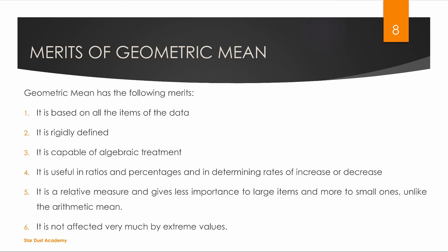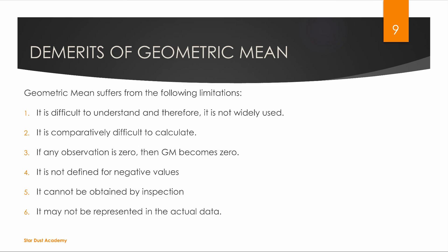Extreme values — if there are higher and lower values, there are changes. Next, it is difficult to understand and therefore it is not widely used. It is difficult to calculate compared to the arithmetic mean. If any observation is zero, then GM becomes zero. It is not defined for negative values; in the definition we use positive values.